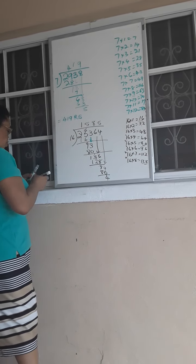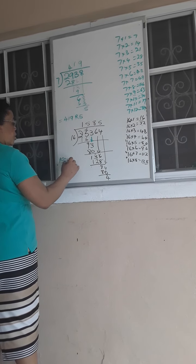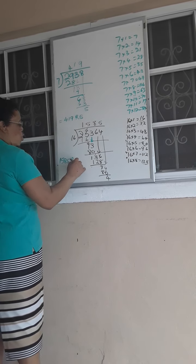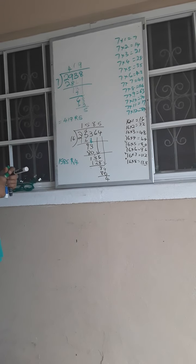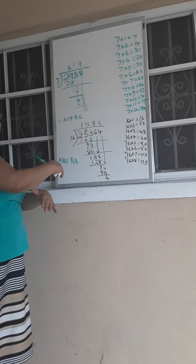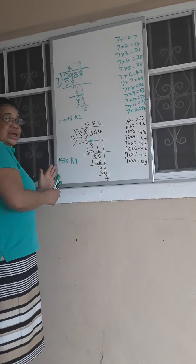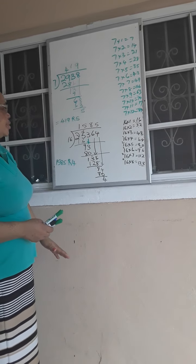So my answer for this problem would have been 1585 remainder 4. So what is division? The vision is simply an opposite to multiplication. Before I can divide, I must first of all know my tables.